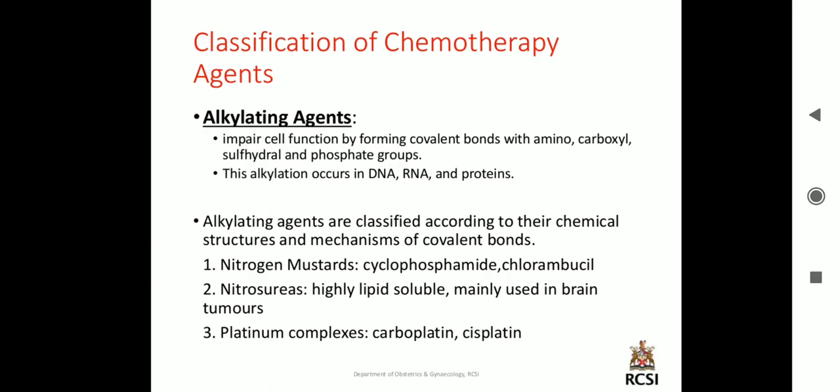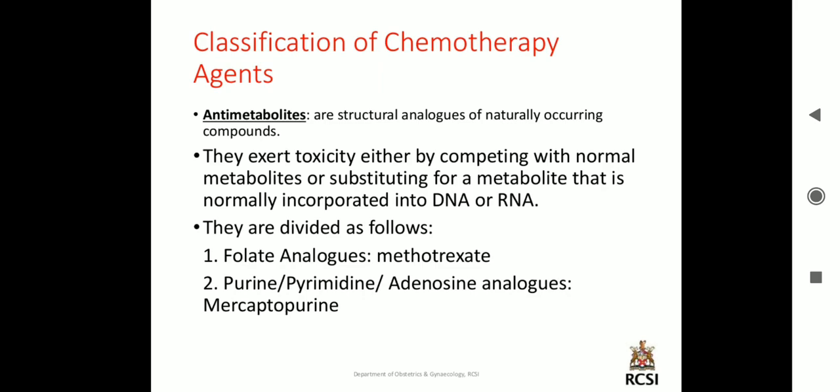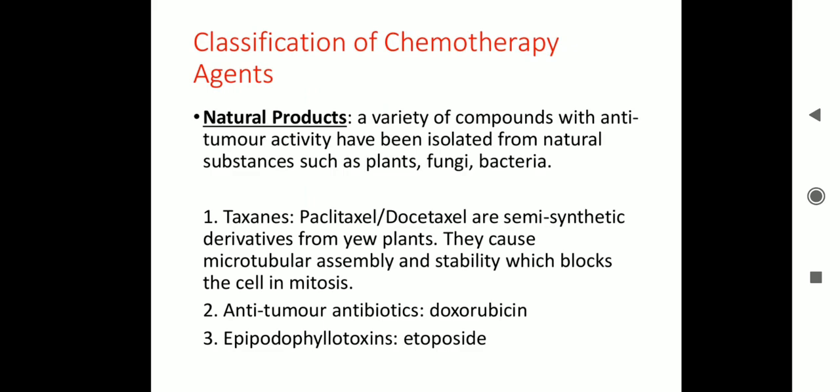Classification of chemotherapy agents: alkylating agents impair cell function by forming covalent bonds with amino, carboxyl, sulfhydryl, and phosphate groups. They are classified as nitrogen mustards, nitrosureas, and platinum complexes. Antimetabolites include folate analogues like methotrexate, and purine/pyrimidine/adenosine analogues like mercaptopurine. Natural products include taxanes: paclitaxel and docetaxel are semi-synthetic derivatives that cause microtubular assembly and stability, blocking the cell in mitosis. Antitumor antibiotics include doxorubicin and etoposide.